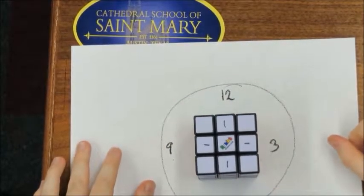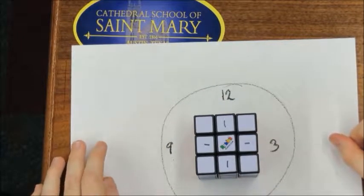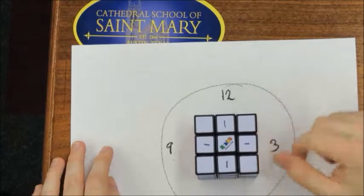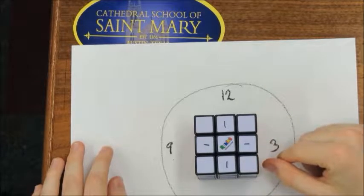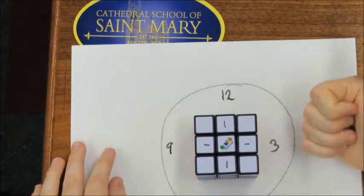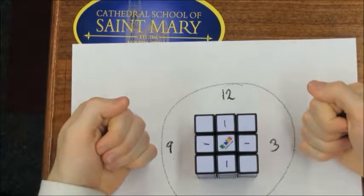So those are our twelve moves. We have six sides, and each one of them can move either clockwise or counterclockwise.